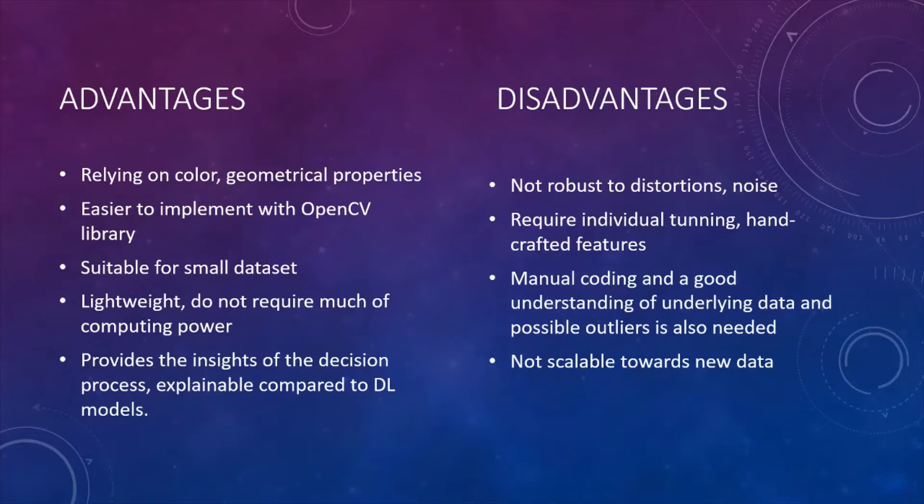However, traditional methods have some advantages. They rely on color and geometrical properties, and that is very explainable. They are lightweight, they do not require much computing power. You can see how this decision process is done compared to deep learning models, which are black box models. Also, traditional methods are suitable for small datasets, and it's currently easy to implement it with OpenCV. However, as we talked about disadvantages, they are not robust to noise, they require individual tuning and manual coding, and they are not scalable towards new data. That motivated us to use deep learning based approach.